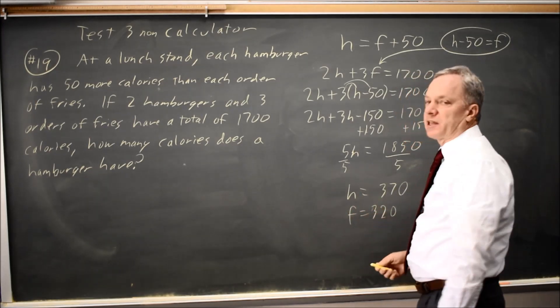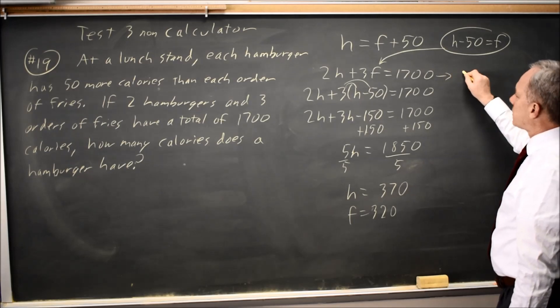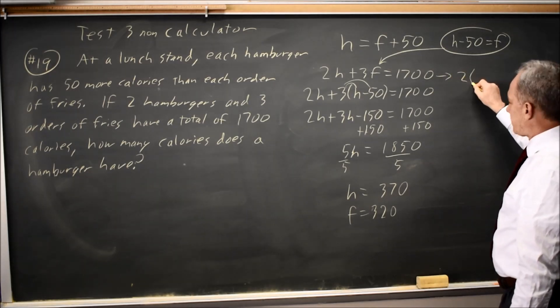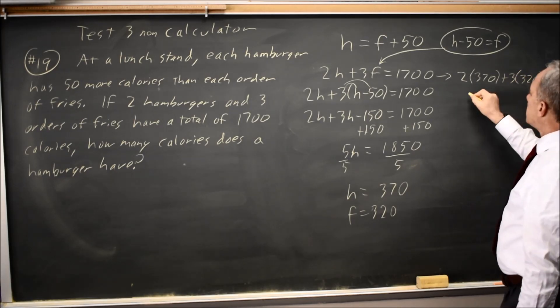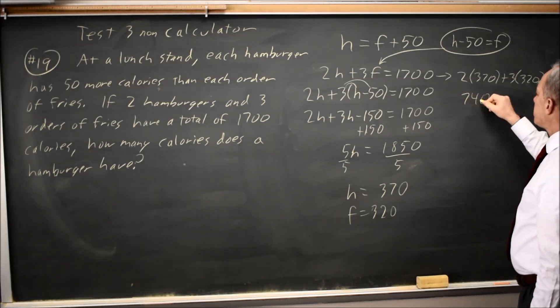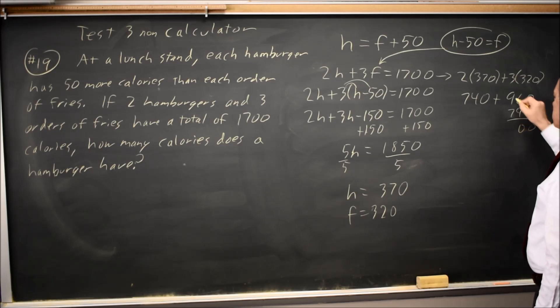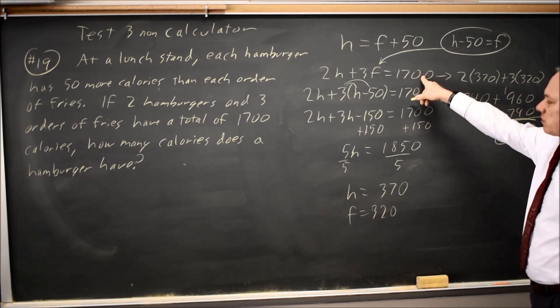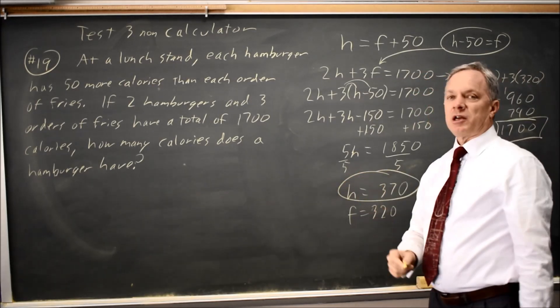College Board didn't ask for that, but I know I can make arithmetic errors with numbers like these, so I'm going to check this equation. Twice the number of calories in a hamburger plus 3 times the number of calories in fries is twice 370, which is 740, and 3 times 320 is 960. 1,700, which is the correct number for this combination, so I did solve it correctly, and they're asking for the number of calories in a hamburger that would be 370.